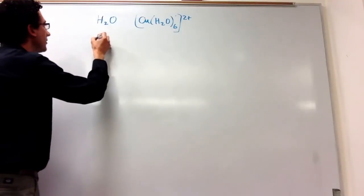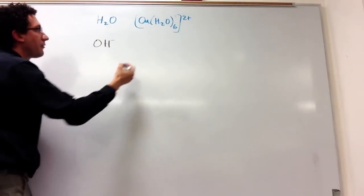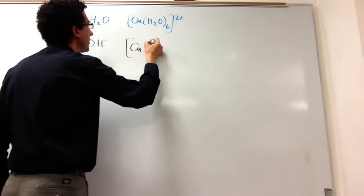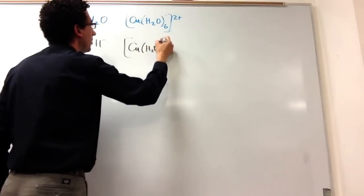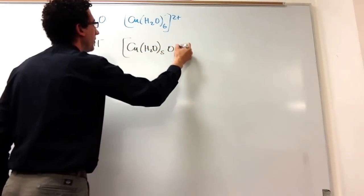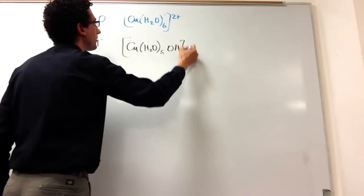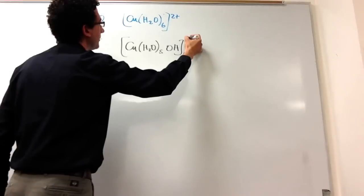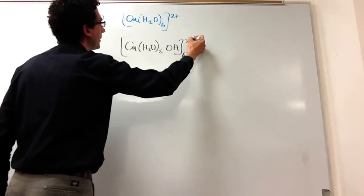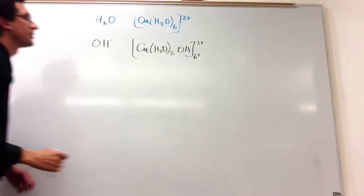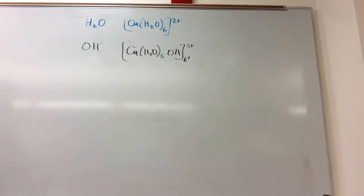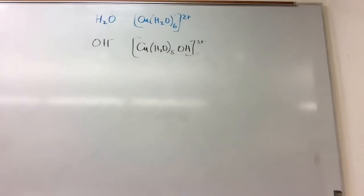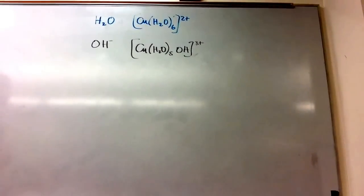One of the ways you could do this is take off one of the protons. So you have H₂O₅ with an OH that has lost a proton. If it loses a proton, I guess this would be 3+. We want to know which one of these is more stable, essentially.